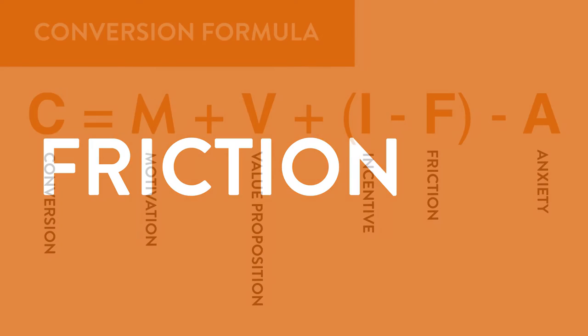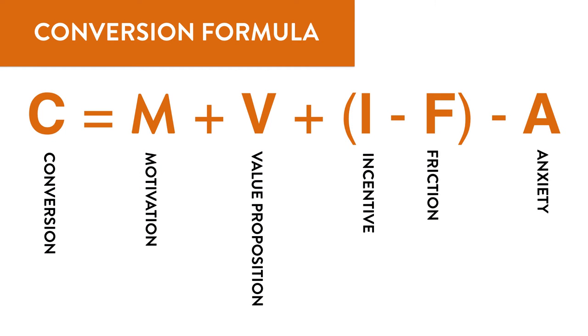How about this friction thing? As you can see from the model, there is a minus sign in front of friction and it's because it pulls away from whatever makes me want to convert.